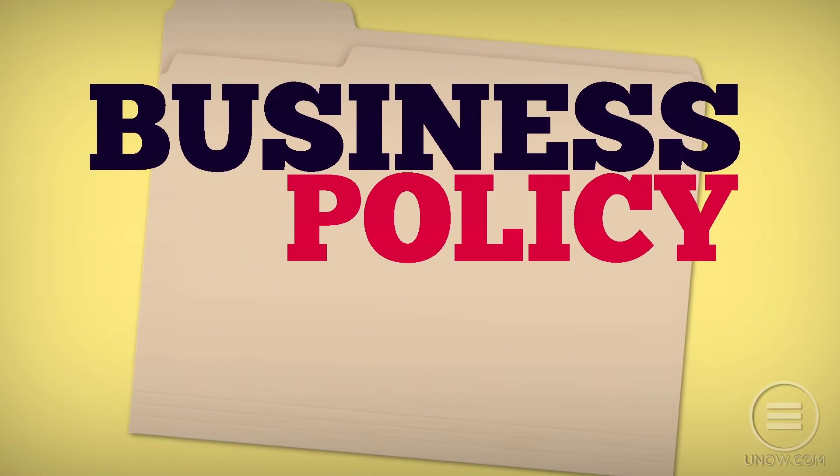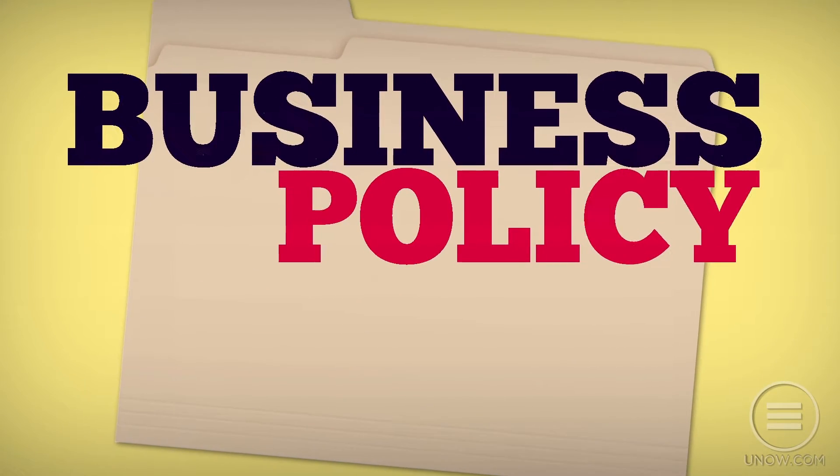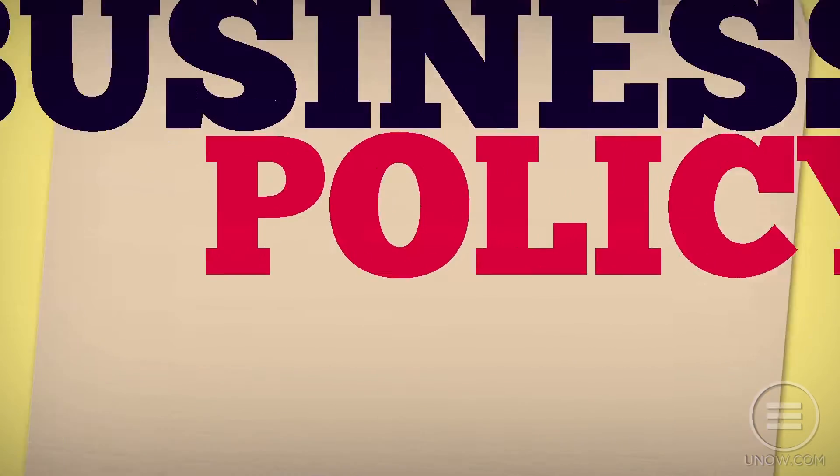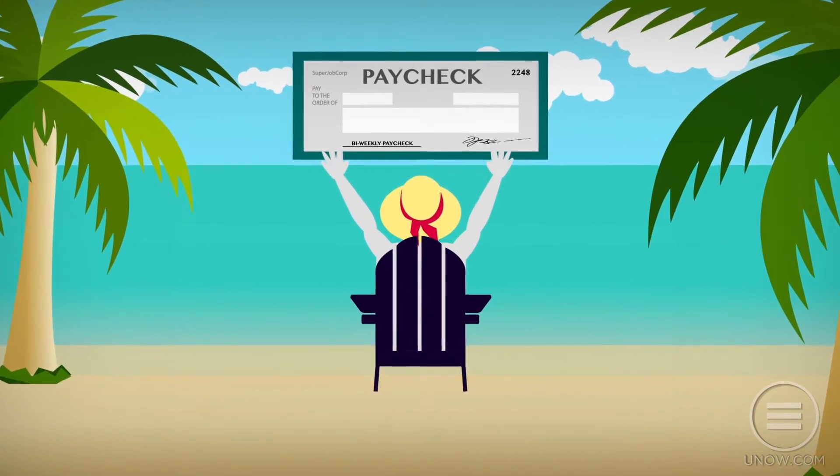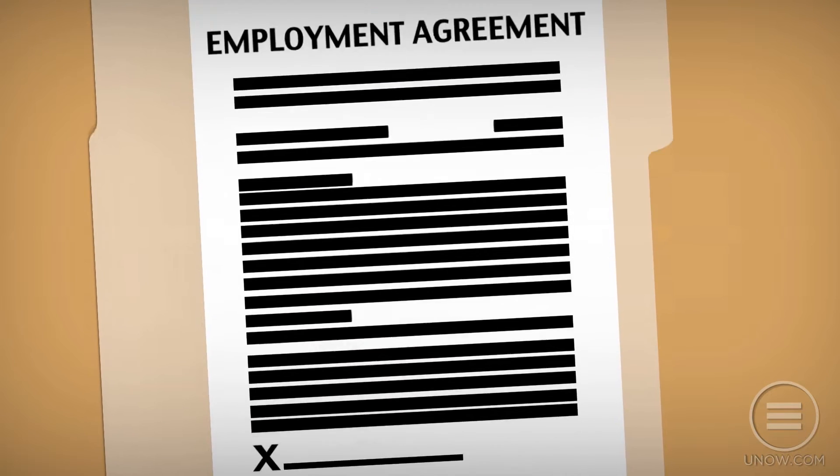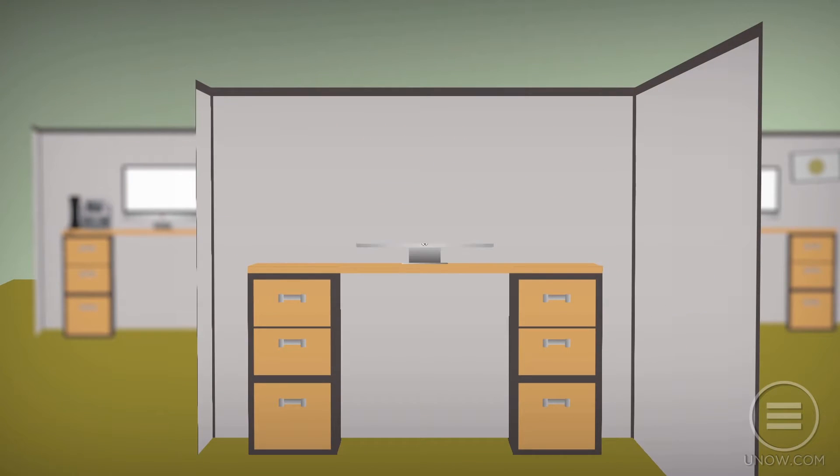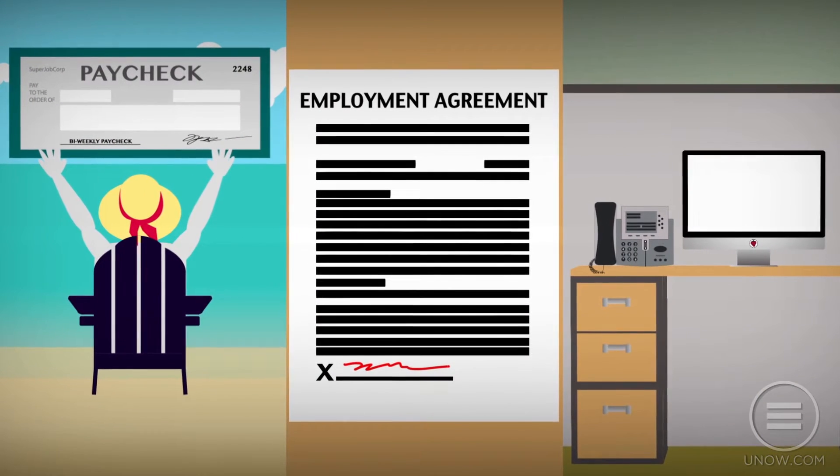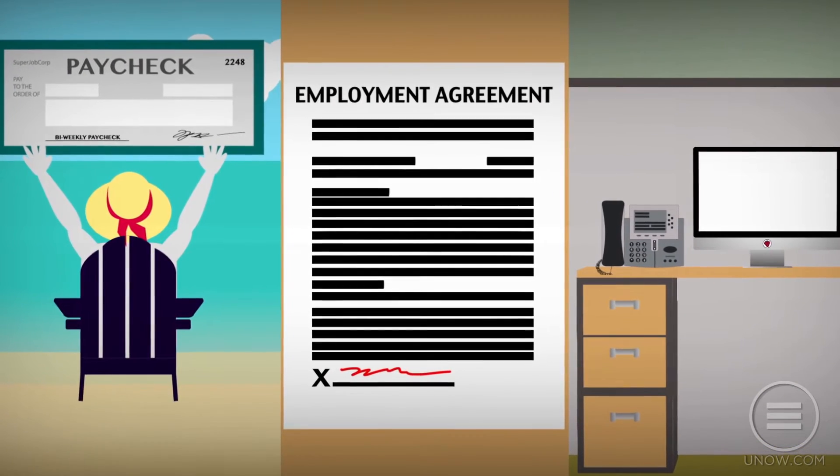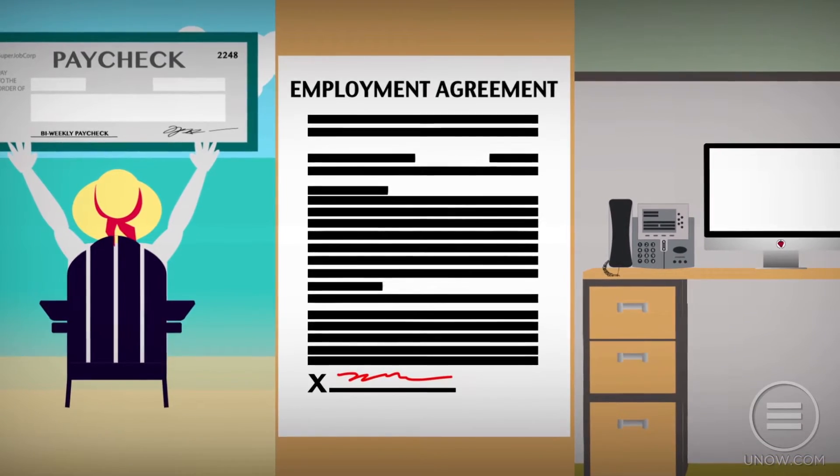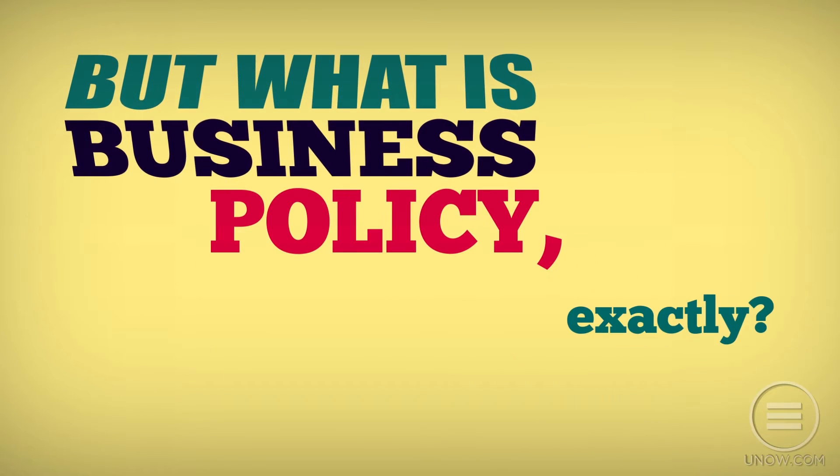You're probably already familiar with some of the most common examples of business policy. Does your company offer paid vacation? Does it use at-will employment or term-specific contracts? Does your company have a policy about the use of company assets? The answers to these questions are examples of your company's internal business policies. But what is business policy exactly?